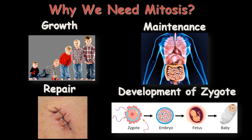Mitosis is also required for the development of the zygote. After zygote formation, throughout the rest of life, mitosis takes place by the production of cells. After zygote formation, all the cells grow into an embryo, then a fetus, and finally the development of the baby. Then throughout life, mitosis takes place for growth, to make new cells and replace old cells.